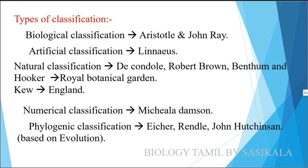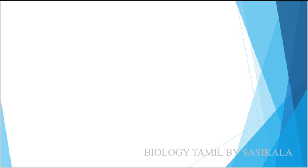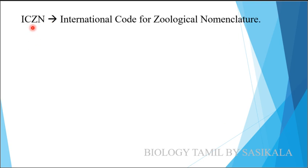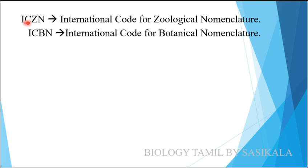The third type is Phylogenetic Classification. In this nomenclature, we use two abbreviations: ICZN — International Code for Zoological Nomenclature, and ICBN — International Code for Botanical Nomenclature. We use these codes to recognize and validate the names of animals and plants.